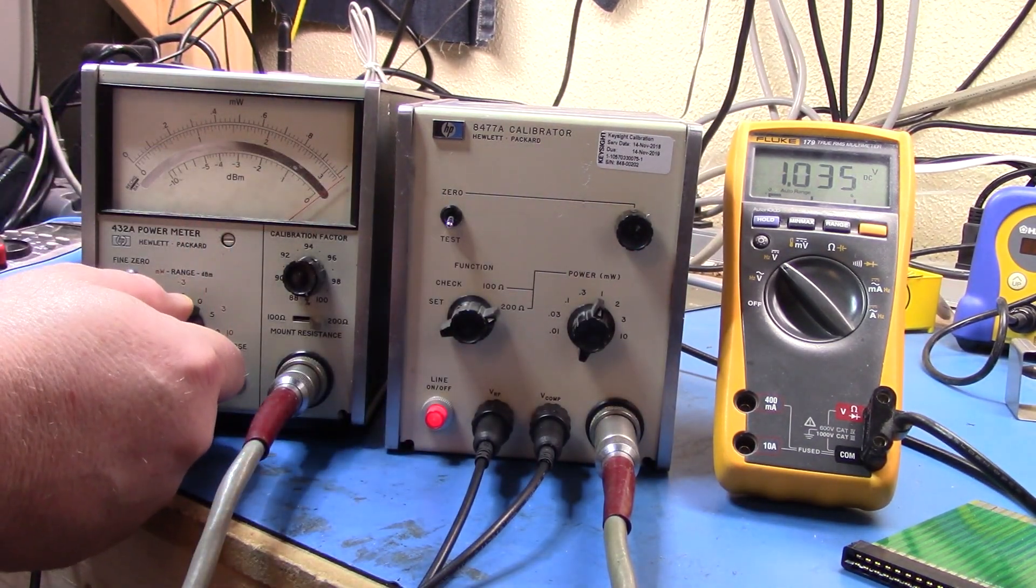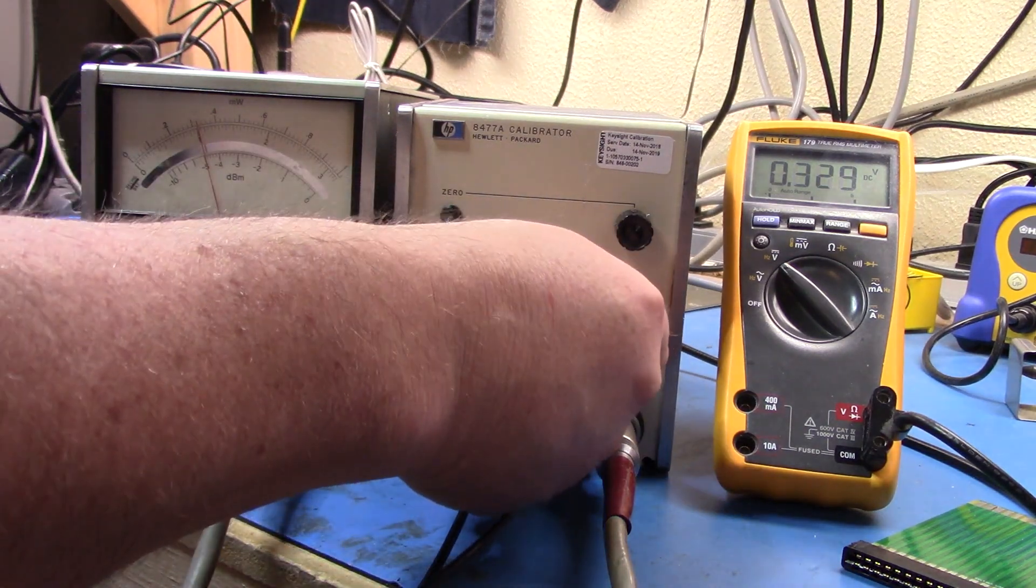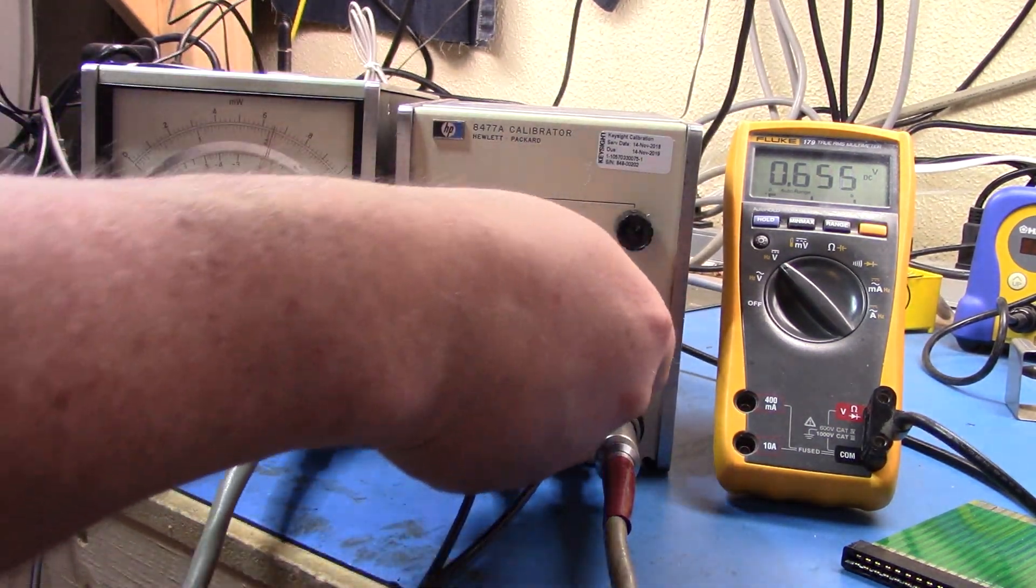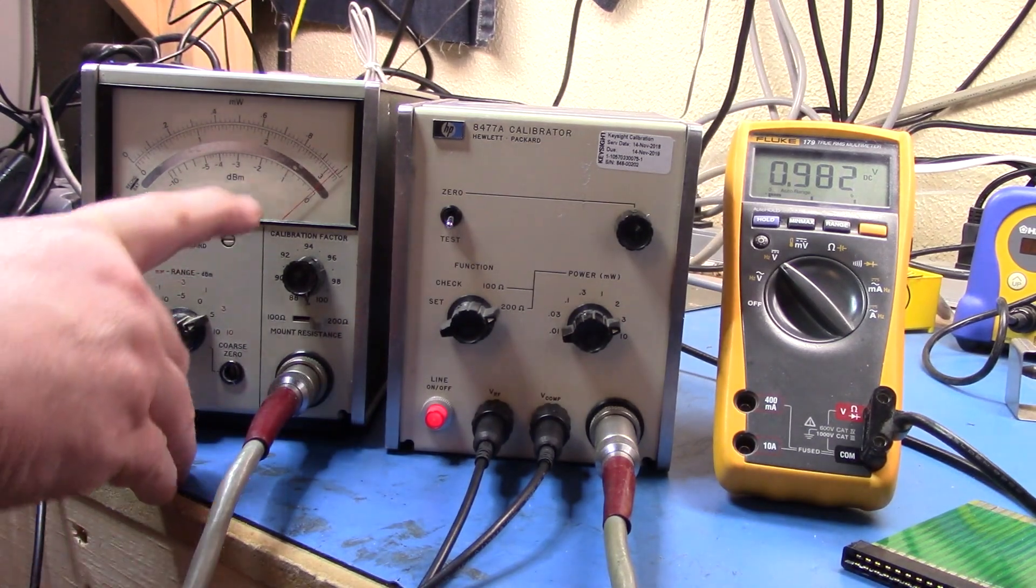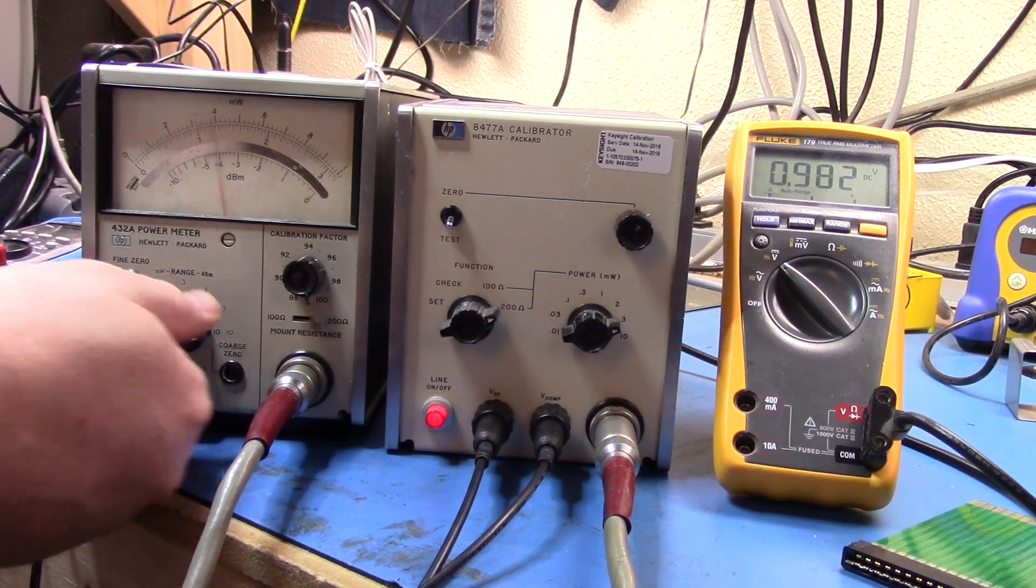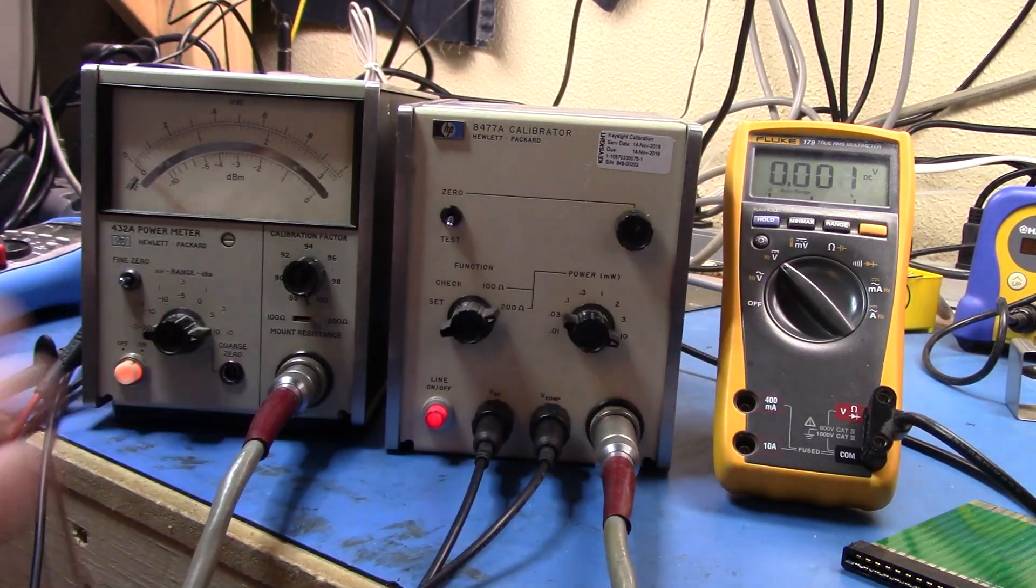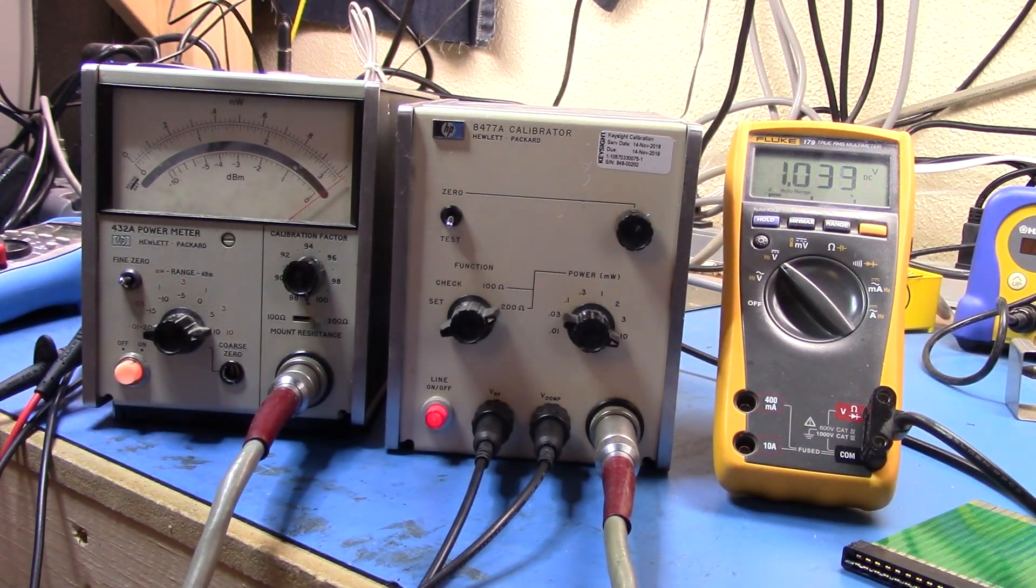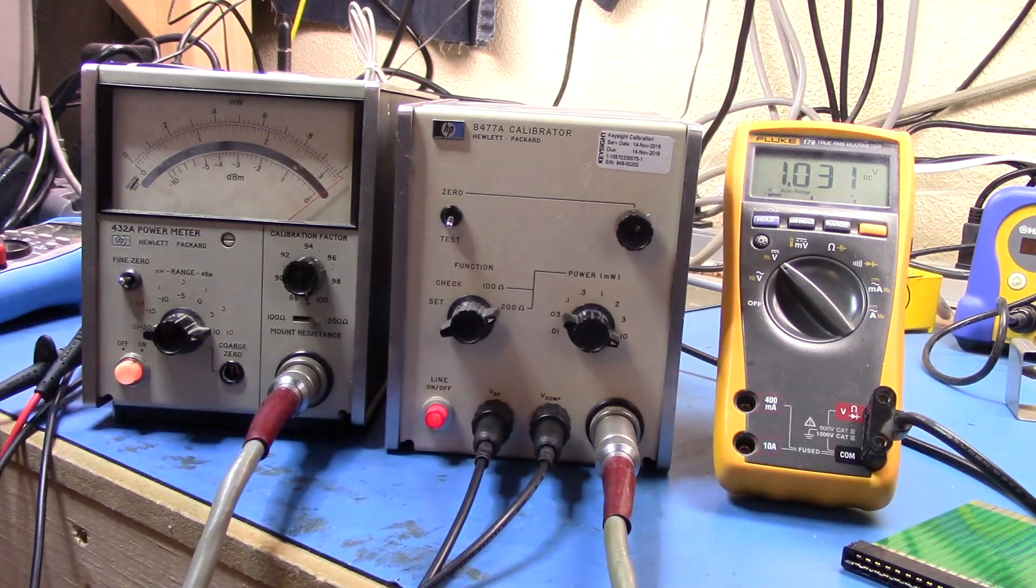You can see that the meter is jumping around, reading 2. We should read around 3. And if we do the final one. You can see that we're getting full scale deflection.